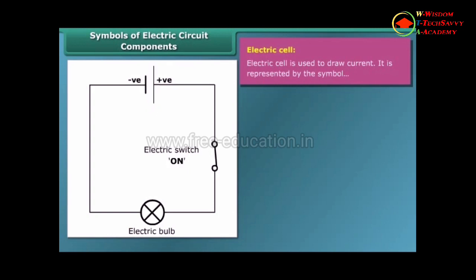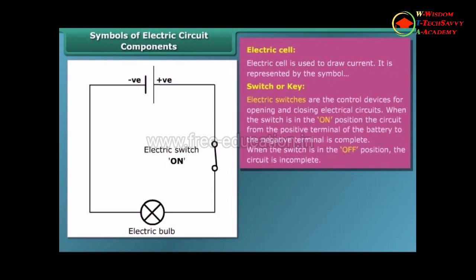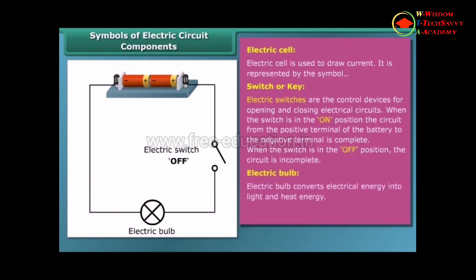Switch or key makes or breaks the connection in a circuit. When the switch is in the on position, the circuit is closed and the current flows throughout the circuit. When the switch is in the off position, the circuit is open. In this case, no current flows through the circuit.